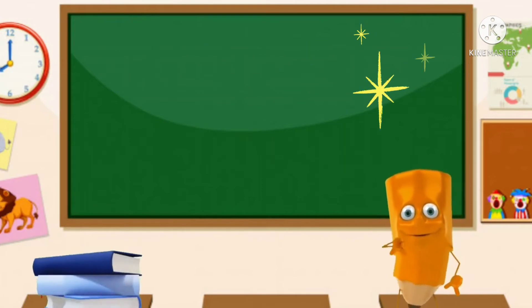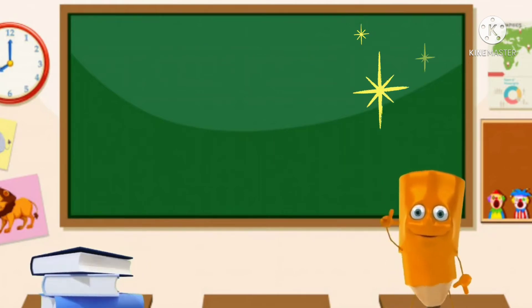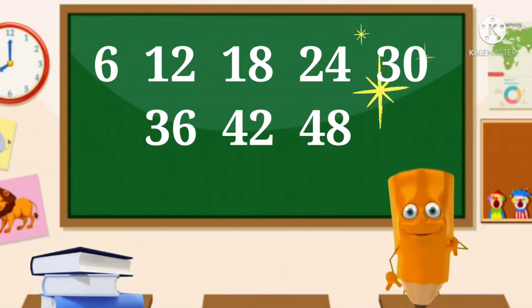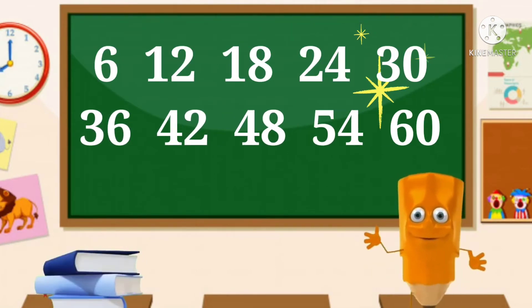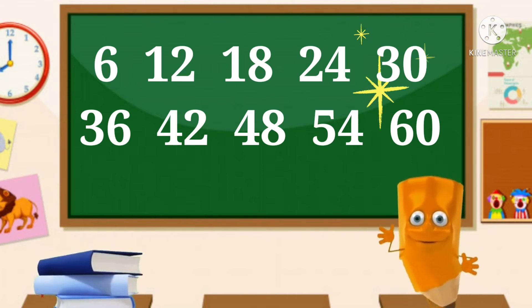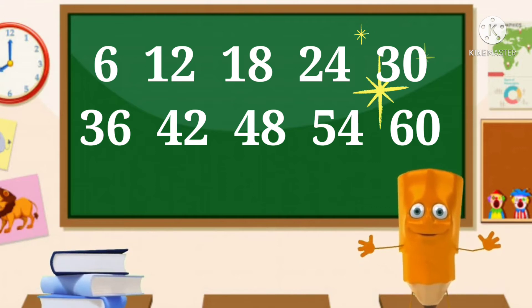Let's learn one more time. 6 ones are 6, 6 twos are 12. 6 threes are 18, 6 fours are 24. 6 fives are 30, 6 six are 36.